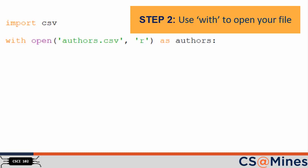Step 2: use `with` to open your file. As you learned in our previous video, the keyword `with` allows you to execute a block of statements associated with a file that is open. After the block of statements is done executing, the file is automatically closed. In this example, we are opening authors.csv in read mode, and we are declaring the variable `authors` as our file handle for this code block.